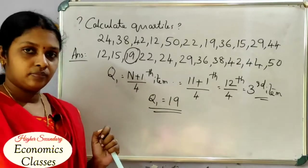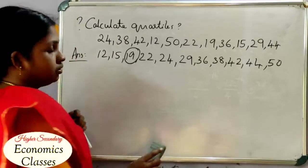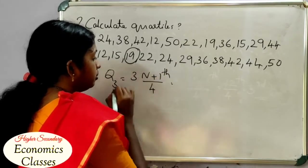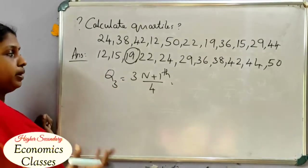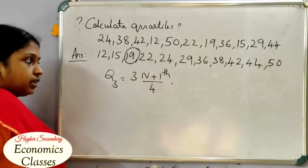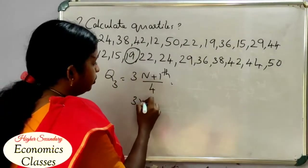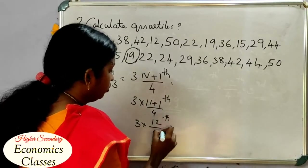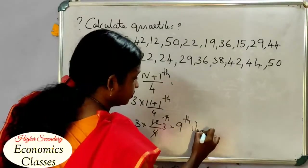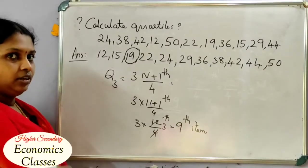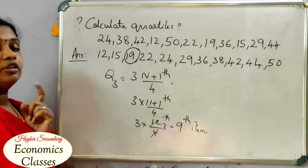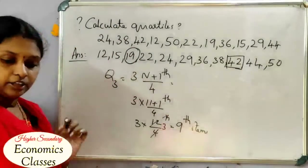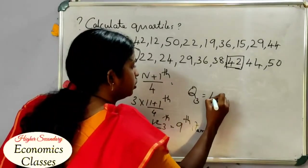Now for Q3. What is the Q3 value? Q3 is equal to 3(N+1)/4 th item. In the previous class we used (N+1)/4, so now we calculate 3 × (11+1)/4 = 3 × 12/4 = 3 × 3 = 9th item. So Q3 is the 9th item. Counting: 4, 6, 8, 9 — 42 is the 9th item. So Q3 = 42.